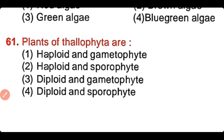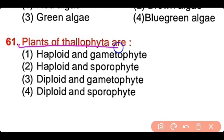Question number 61: Plants of thallophyta are haploid and gametophyte, haploid and sporophyte, diploid and gametophyte, or diploid and sporophyte? The correct answer is option 1. The plants of thallophytes are haploid and gametophyte.